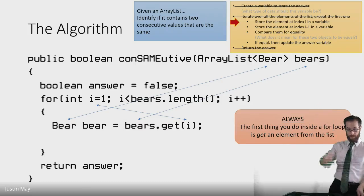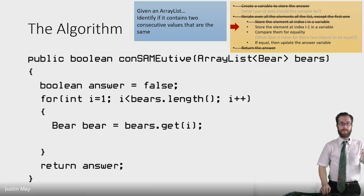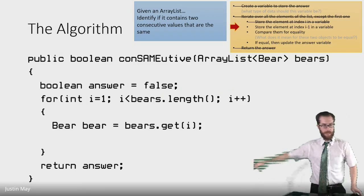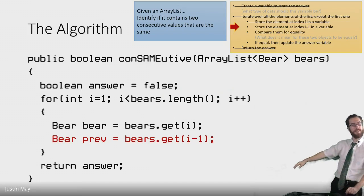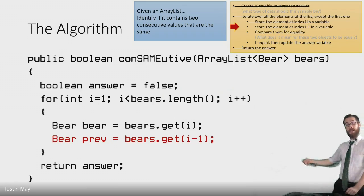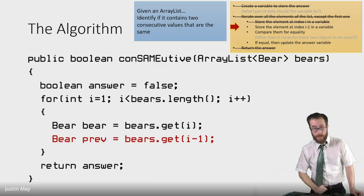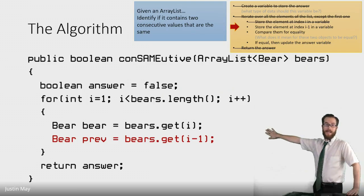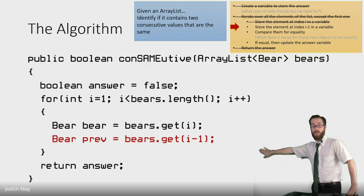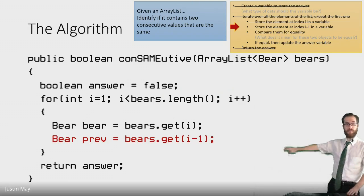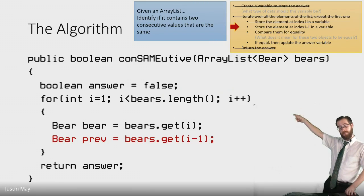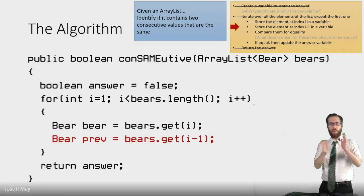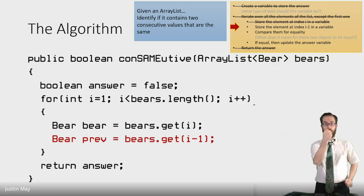The next step is to get the element at index i minus one and store that in a variable. I'll call this one 'prev' for previous. So: Bear prev = bears.get(i - 1). This is why we skipped the first index — because in the first iteration, index i gives us index one, and index i minus one gives us index zero. So our first iteration gets the second bear and the first bear. We skipped the first one in the loop header, but we actually get it here because we're comparing consecutive bears.